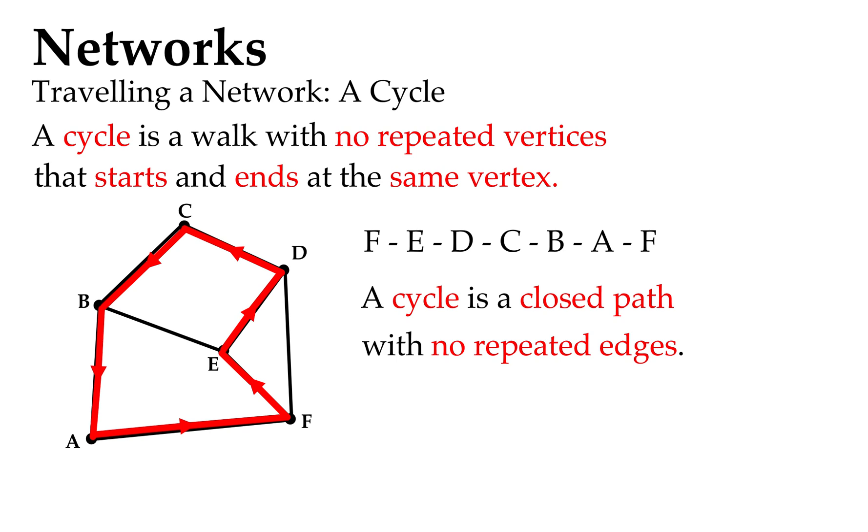You'll notice, when you have no repeated vertices, if you've ticked that one off, it's impossible to have repeated edges because a repeated edge would have some repeated vertices by definition. But they're just technicalities there. So a cycle is a walk with no repeated vertices. It does have to start and end at the same vertex though.